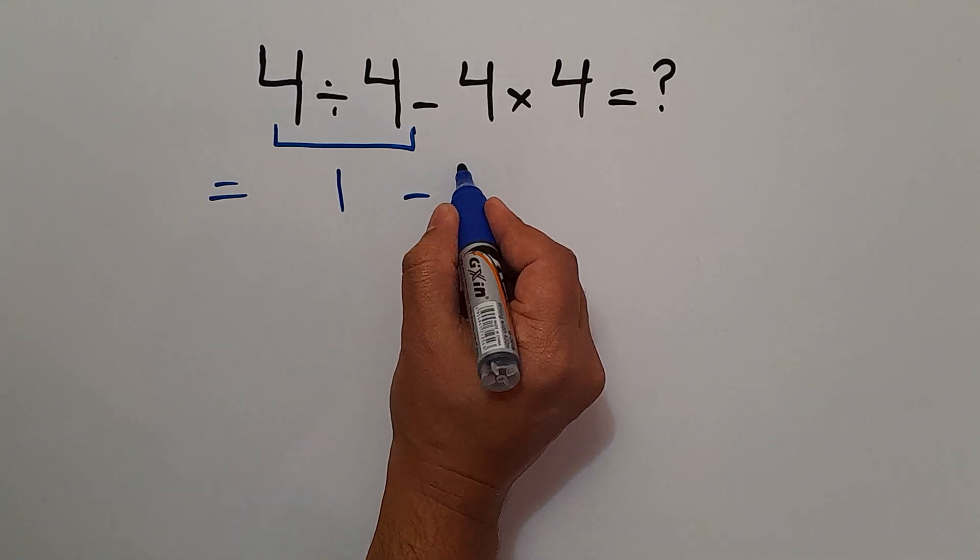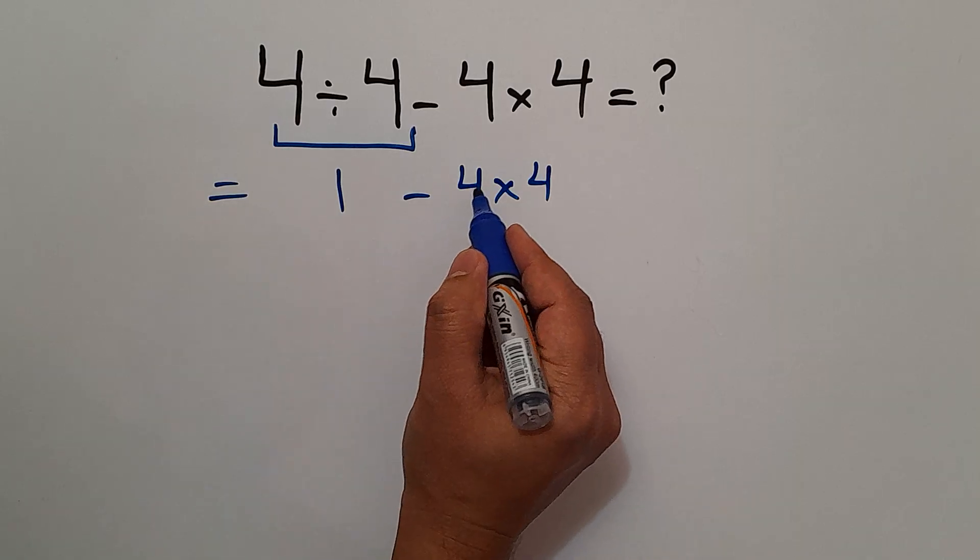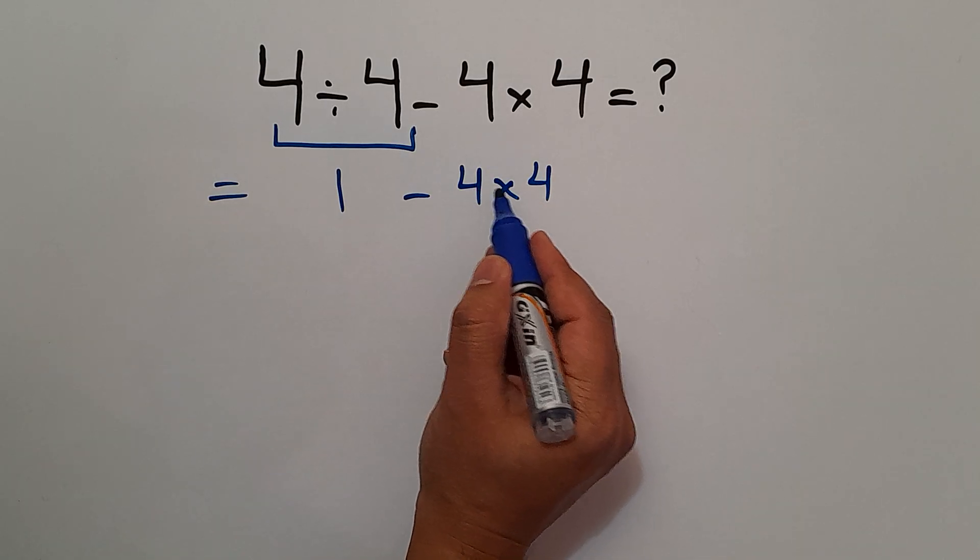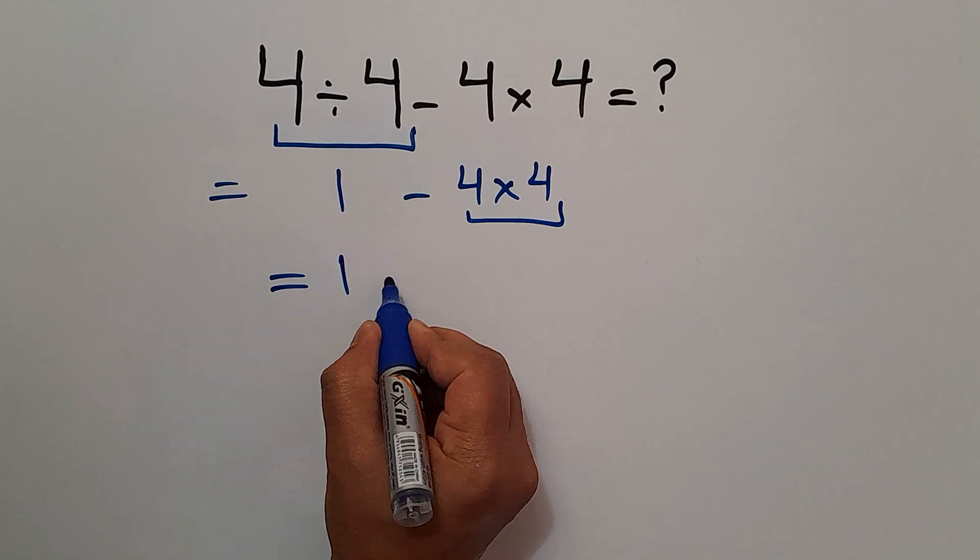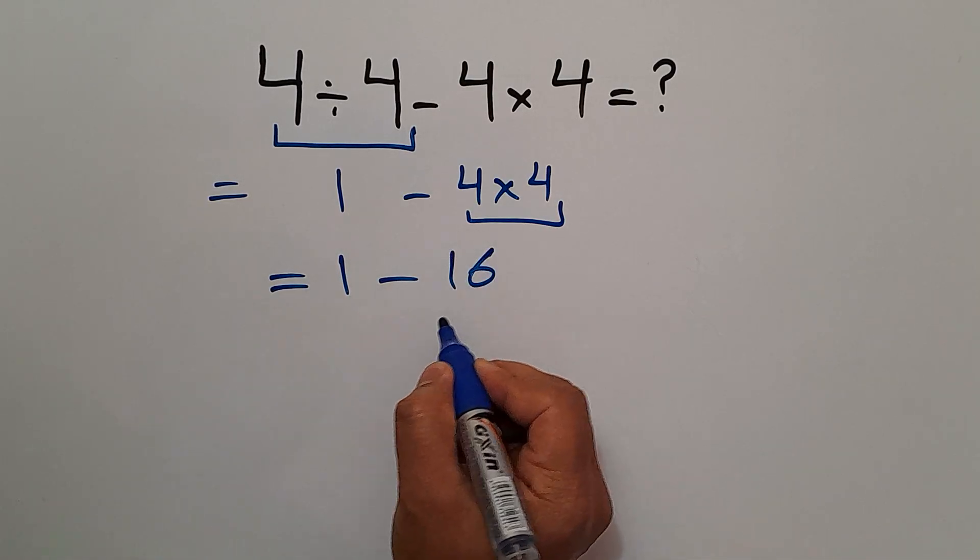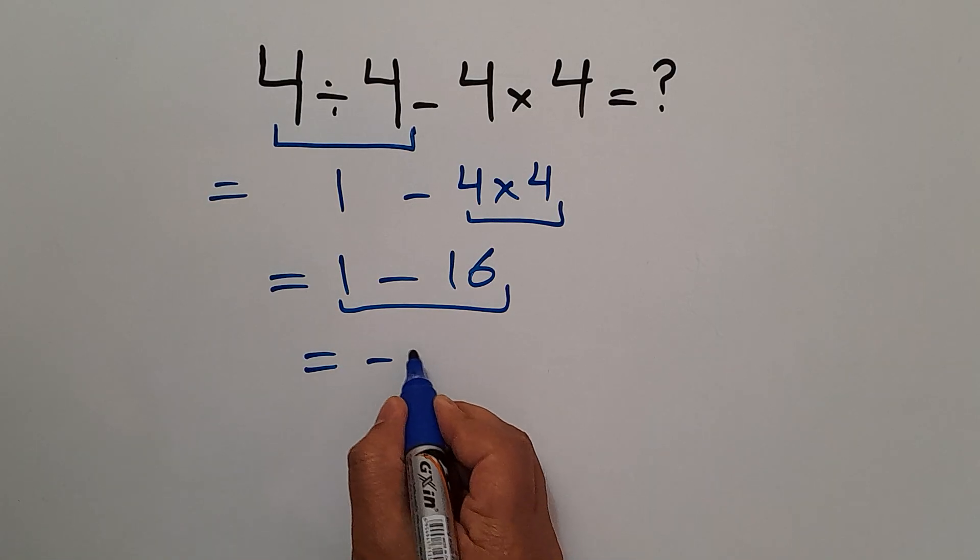So 1 minus 4 times 4. Now, we do this multiplication. 4 times 4 gives us 16. So we have 1 minus 16. And 1 minus 16 equals negative 15.